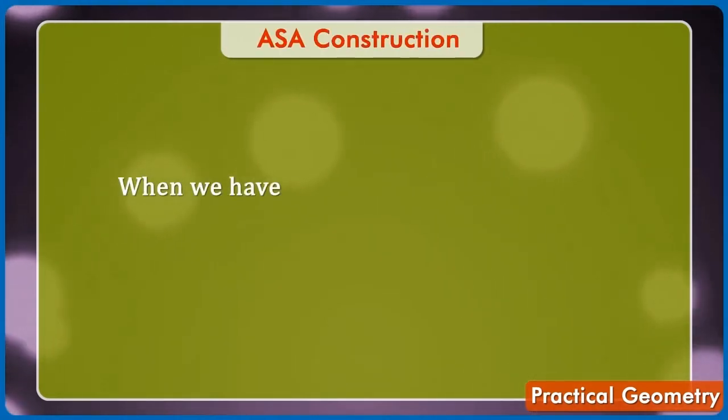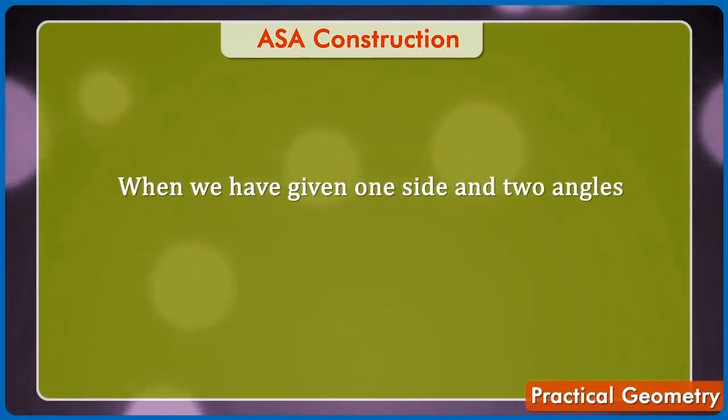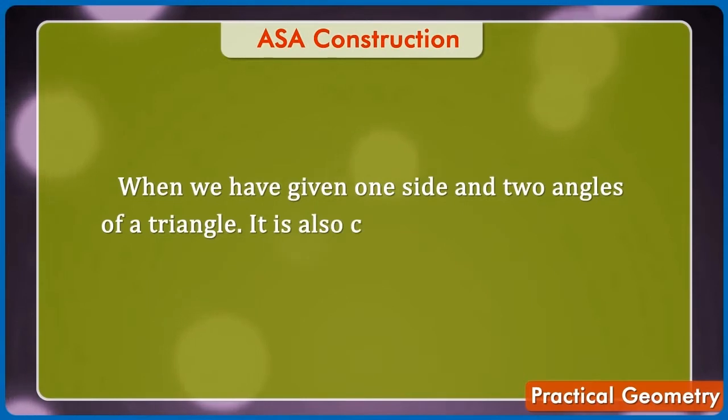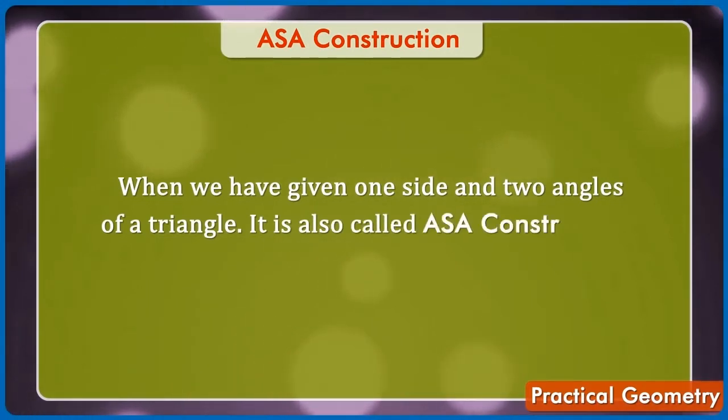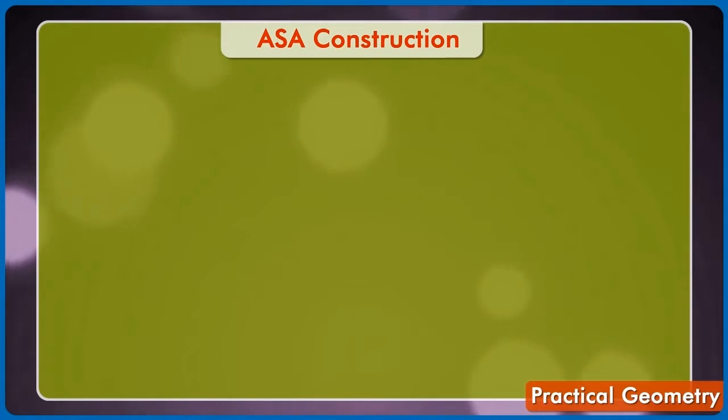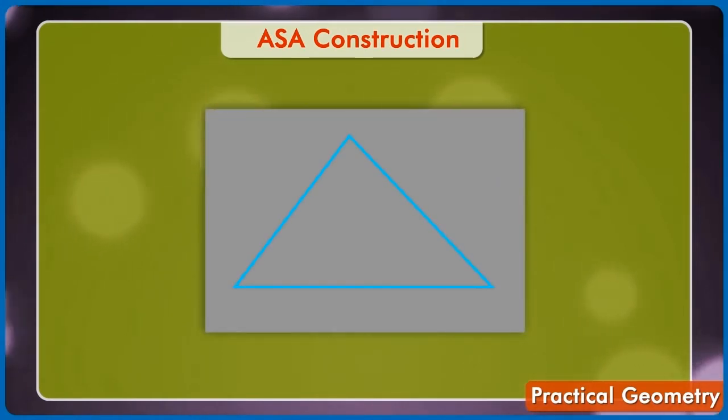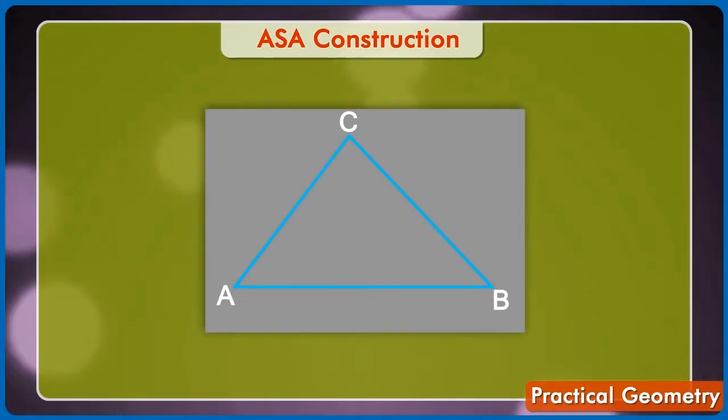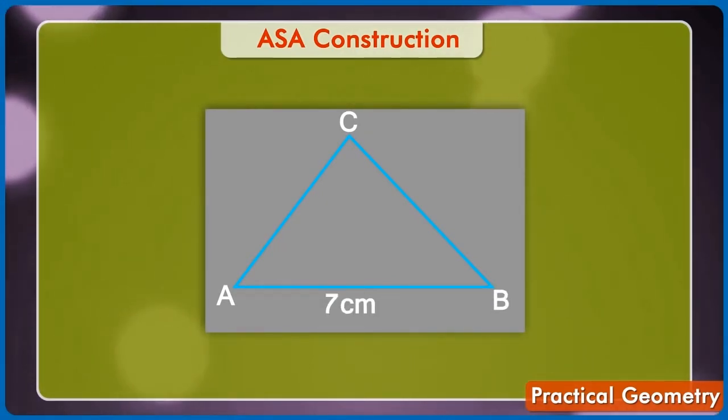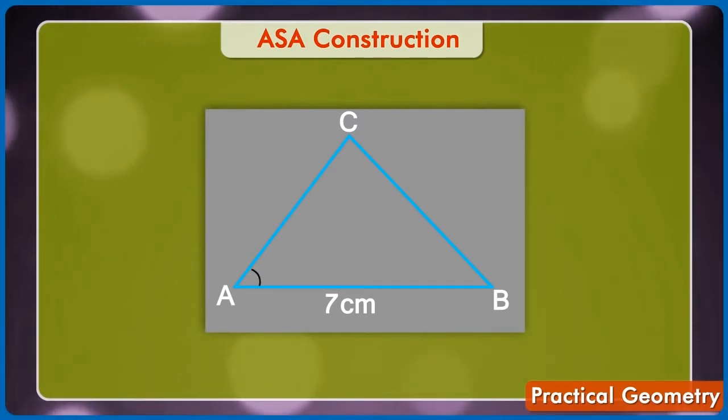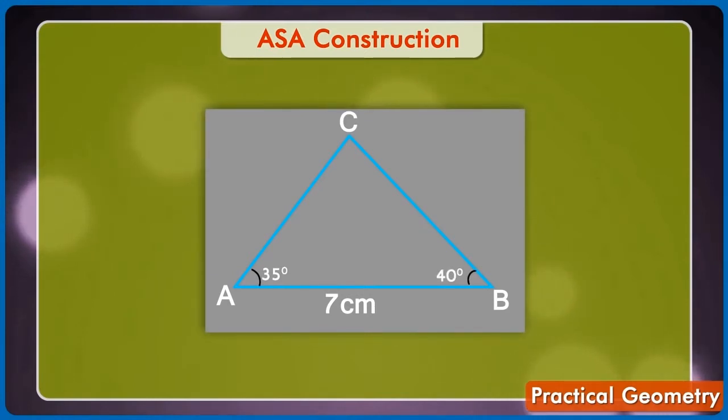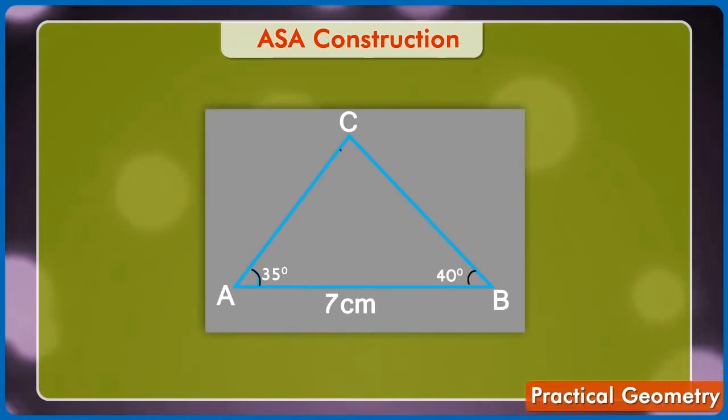The next construction is when we have given one side and two angles of a triangle. It is also called ASA construction. For example, construct a triangle ABC given AB is equal to 7 cm, angle A is equal to 35 degrees, angle B is equal to 40 degrees.